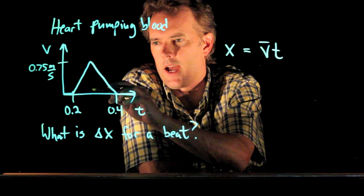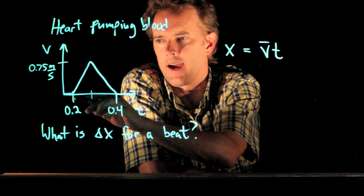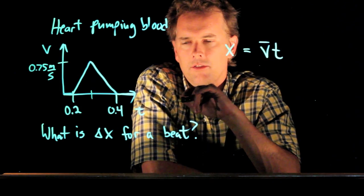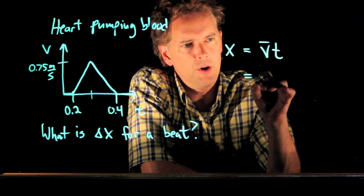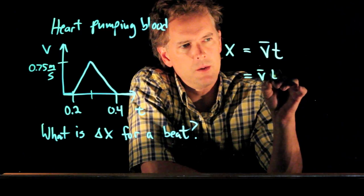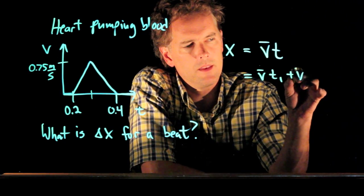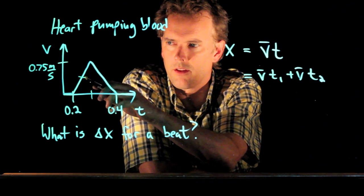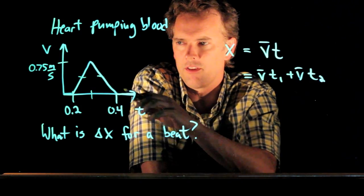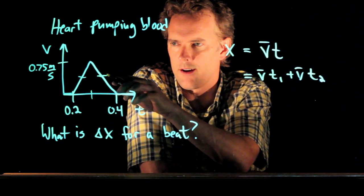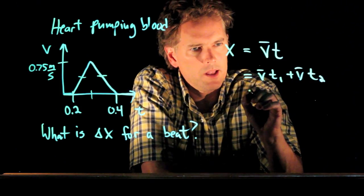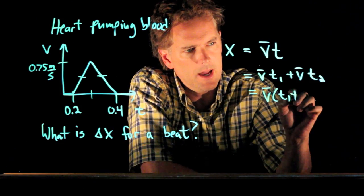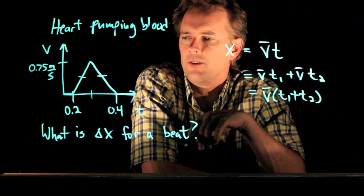And in fact, we have two regions to worry about. We have this first part on the way up and the second part on the way down. So if we label those two parts t1 and t2, what can we say? Well, v bar is the same for both of those sections. It's about halfway up there. And so we can lump these together and say that v bar is going to multiply t1 plus t2.